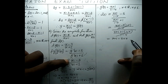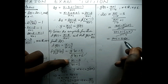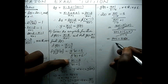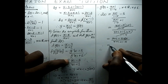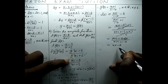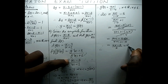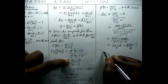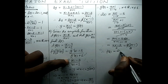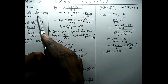So we get x plus 1 minus 3 plus 3x all over x plus 1 plus 1 minus x. This gives 4x minus 2 all over 2, since x minus x is 0 and 1 plus 1 is 2. That simplifies to 2 times 2x minus 1 all over 2, and the 2s cancel. Therefore f of x equals 2x minus 1, which is the original function that we started with.